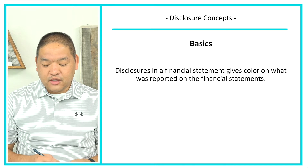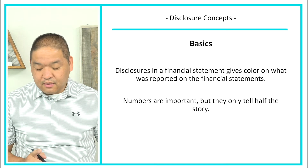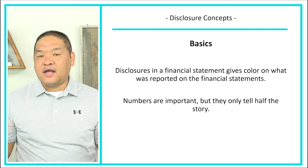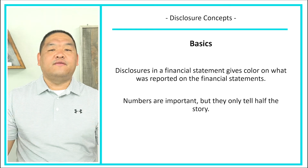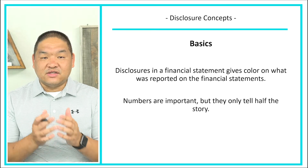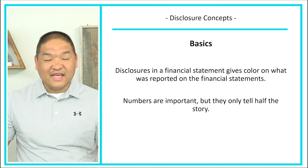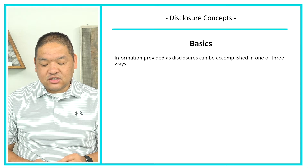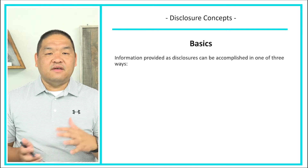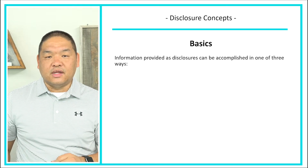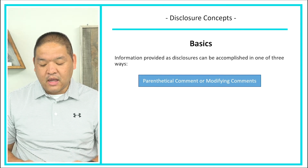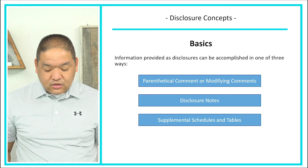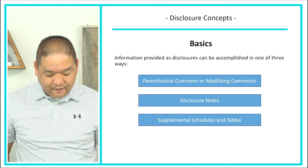Disclosures give color on what was reported — numbers are important but they only tell half the story. If we see revenue is $45,000, what does that mean against last year when we had $90,000 or the year before when we had $150,000? Information provided as disclosures can be accomplished in one of three ways: parenthetical or modifying comments, a disclosure note, or a supplemental schedule or table.